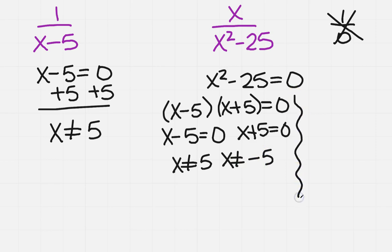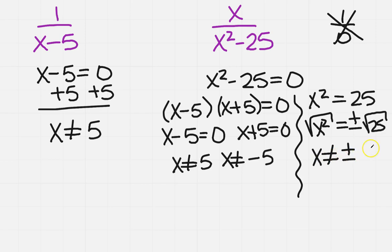Now, some of you may see it as x squared equals 25, and then you would take the square root of both sides. If you do that, make sure you remember to take the positive and the negative square root. So then x could not be plus or minus 5. Whichever way you do is fine. Just make sure you're consistent in what you do.